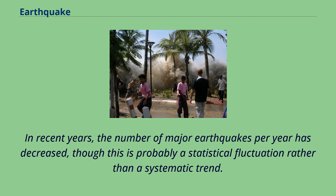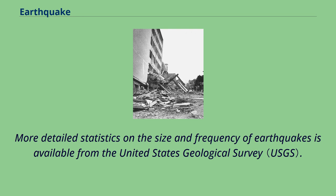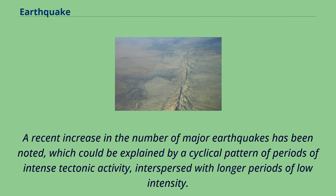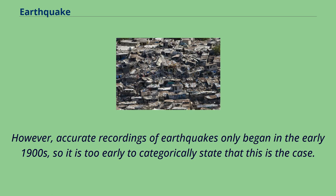In recent years, the number of major earthquakes per year has decreased, though this is probably a statistical fluctuation rather than a systematic trend. A recent increase in the number of major earthquakes has been noted, which could be explained by a cyclical pattern of periods of intense tectonic activity interspersed with longer periods of low intensity. However, accurate recordings of earthquakes only began in the early 1900s, so it is too early to categorically state that this is the case.